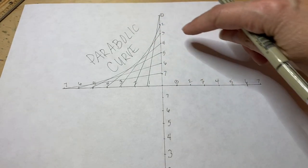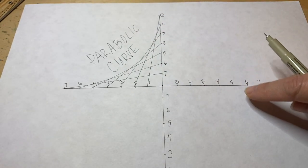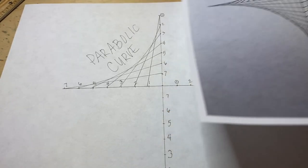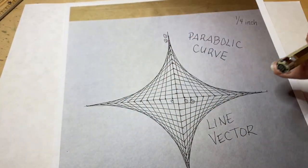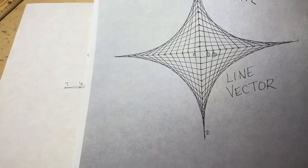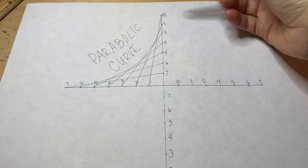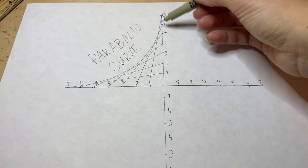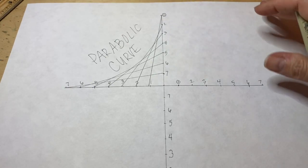Now you're going to do the same thing on the other side, all the way around, until you eventually have curves on all four sides. You can do this with different amounts of lines as long as your connections coincide with the numbers.